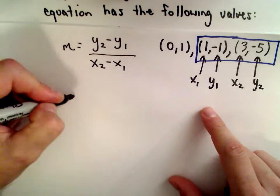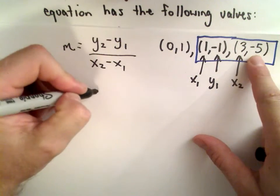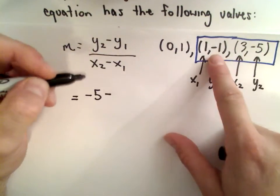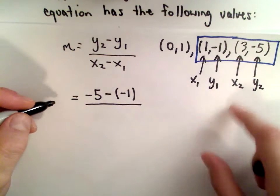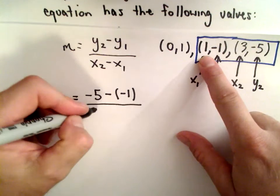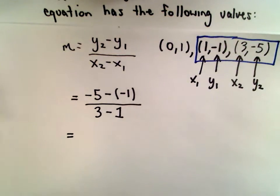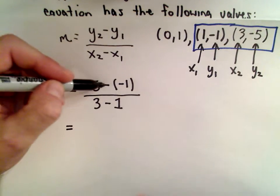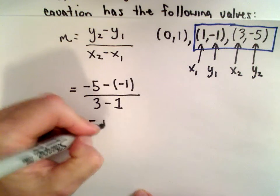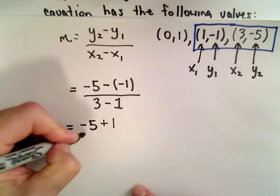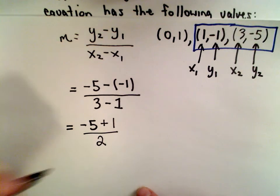Let's do the change in y. We'll do negative 5 minus negative 1. I'm going to put that in parentheses just to make it look a little cleaner here. And then we've got 3 minus positive 1. Negative 5 minus negative 1, a negative and a negative will make a positive. In the denominator, 3 minus 1, that's going to be positive 2.